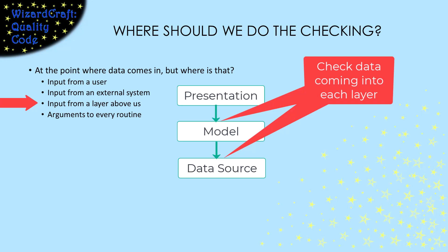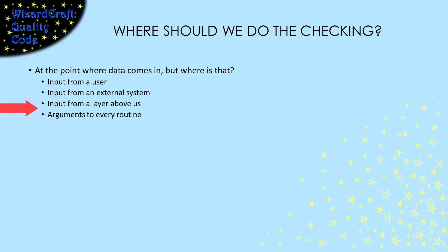We could draw those kinds of lines wherever they make sense in our architecture. You could take this to the extreme and check every parameter in every routine, but that's probably overkill and would result in rechecking values as they get passed from one routine to another. So one of the early design decisions your team should make is where error checking should be done.